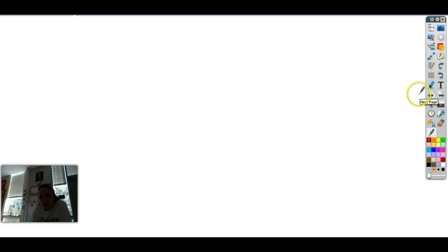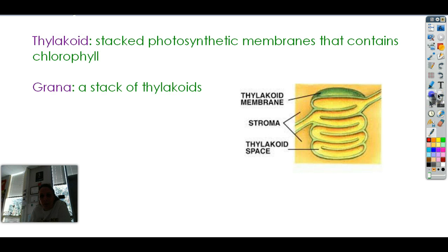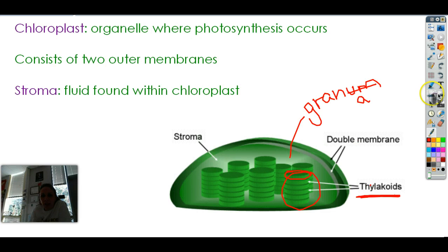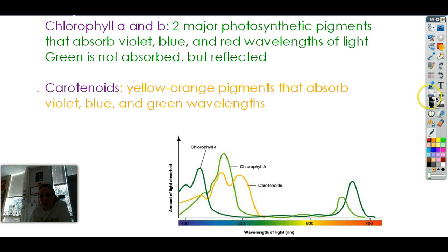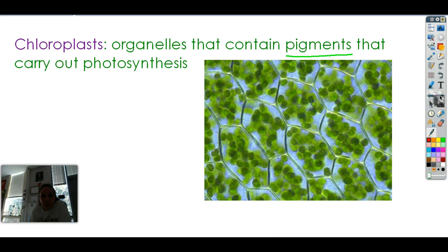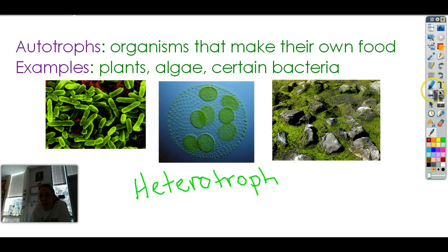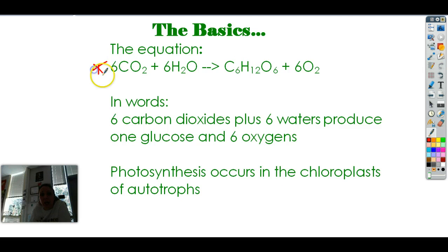That's it for today — very simple. This unit has lots of small molecular details and chemical processes, so you really have to practice. What do we need to know? All the structures of a chloroplast: stroma, thylakoids, grana, double membrane. We want to know about the two main types of pigments — chlorophyll and carotenoids — and what colors they absorb and what colors they reflect. You should know what an autotroph is, what it means, some examples, and what color most autotrophs are. And heterotroph — know the difference between them. And the formula — you've got to know the formula.